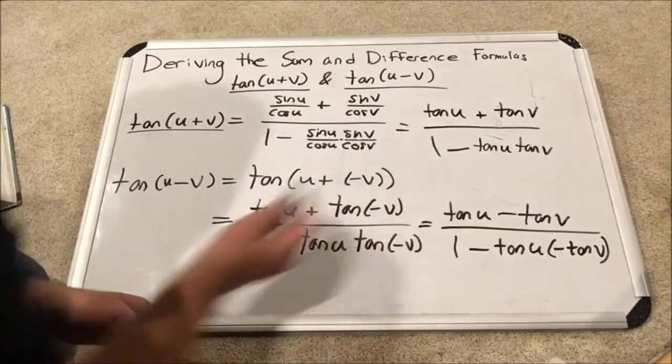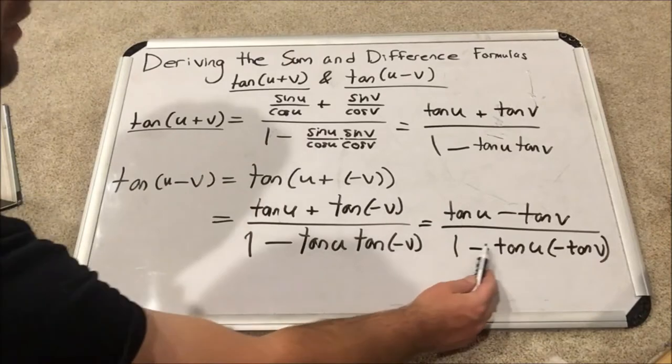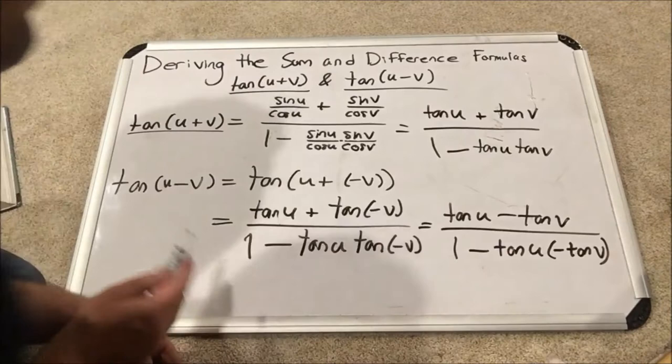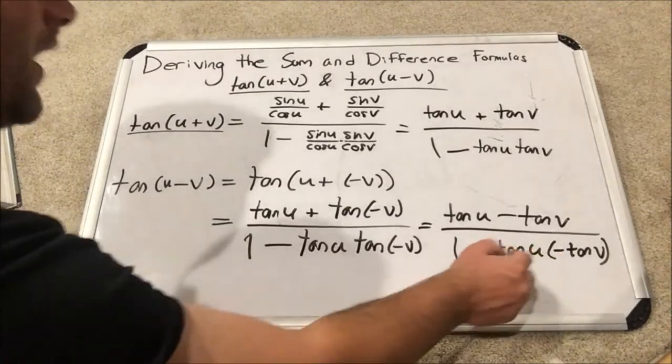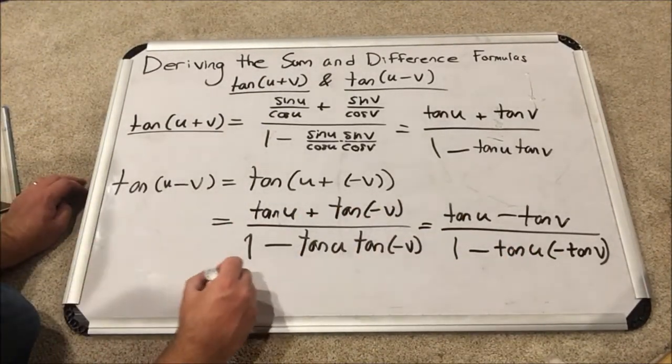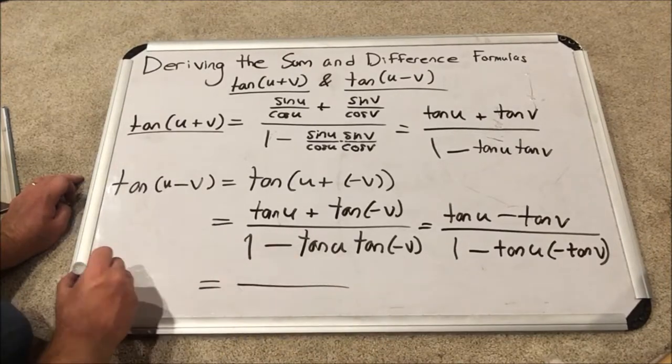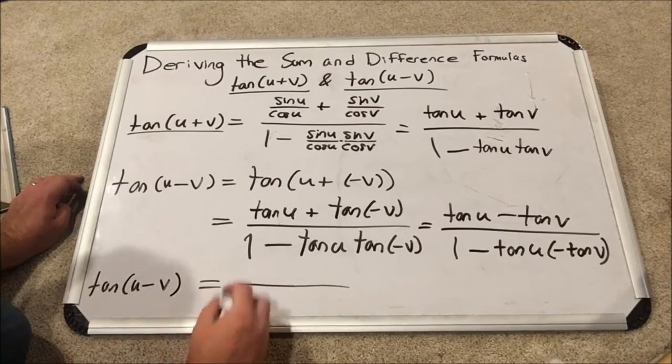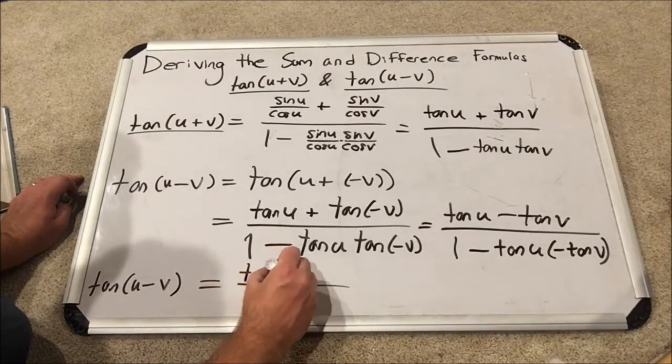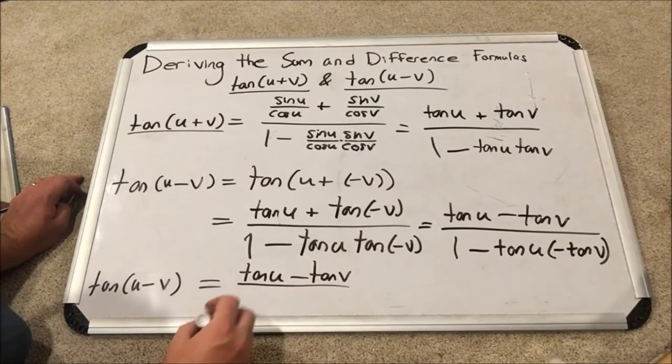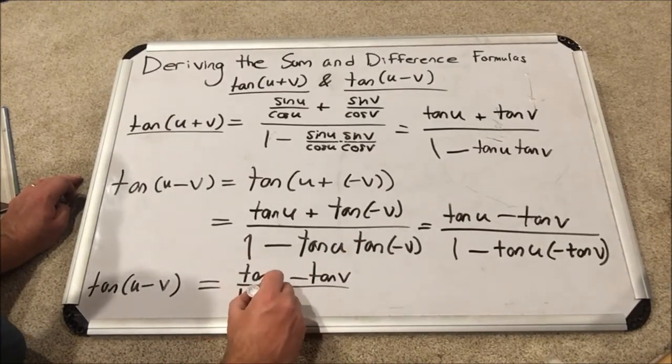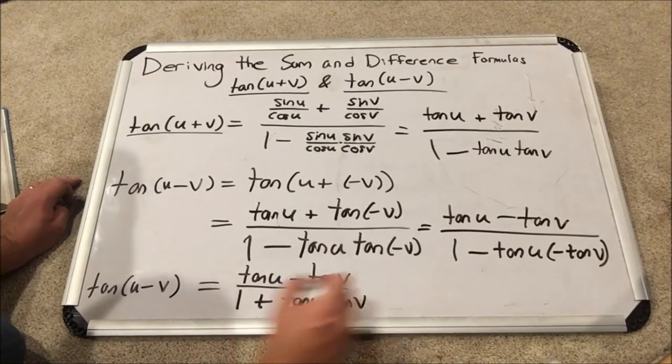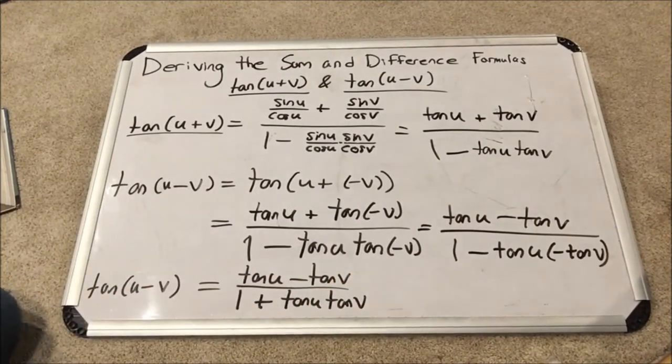So on top we're set, but on bottom, I'm going to move that negative out in front so I don't get confused here and think I'm subtracting when I'm actually multiplying. These two negatives will combine to make a positive. So all in all, we'll have that the tangent of u minus v is equal to the tangent of u minus the tangent of v over one plus tangent u tangent v. And we have derived that formula as well.